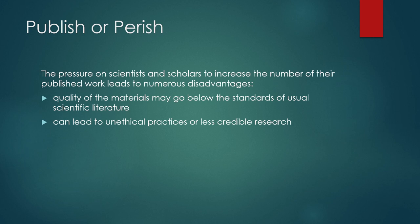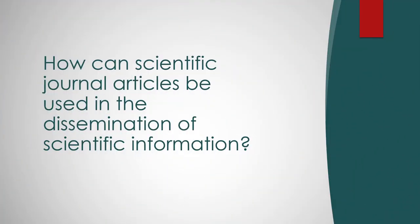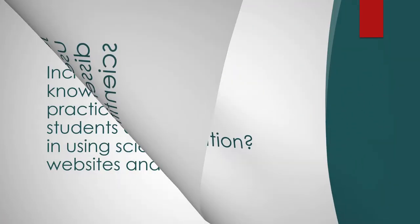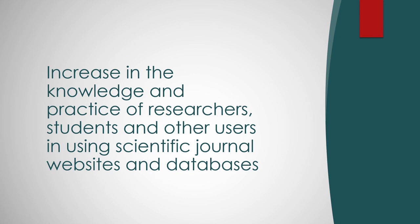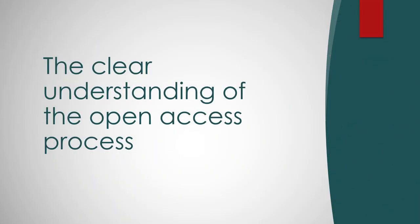Those are some of the problems with journal articles and their publication that affect how they can be utilized in the proper dissemination of scientific information. To address these, we would like to dig deeper into how journal articles can effectively be used. First is increasing the knowledge and practice of researchers, students, and other users in using scientific journal websites and databases. It is important to educate everyone on how they can exhaust all available resources. Next is a clear understanding of the open access process, so that authors and researchers know how to publish their articles under the appropriate license.